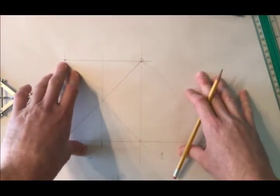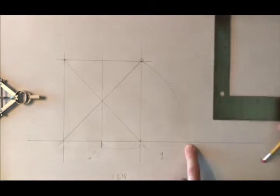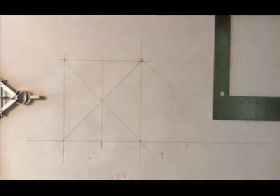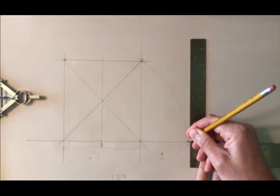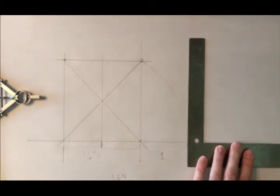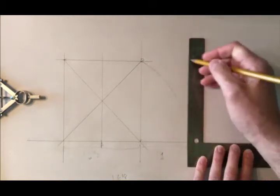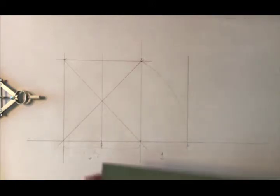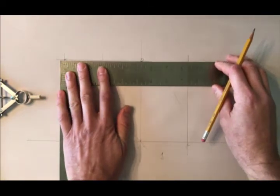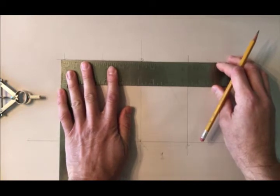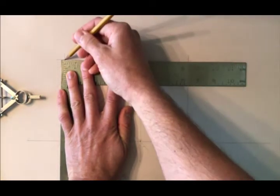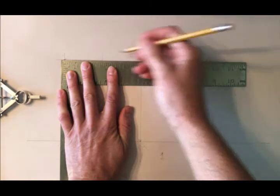How we want to turn this into a golden rectangle is by taking that mark. We can say this is mark C for our purposes. We can do a perpendicular line that's rising up from there. Now it's a simple matter of connecting the dots. In this case, just extending that line.